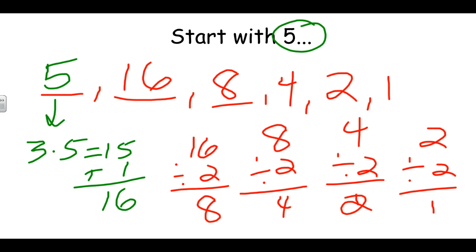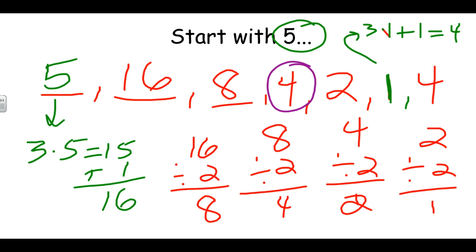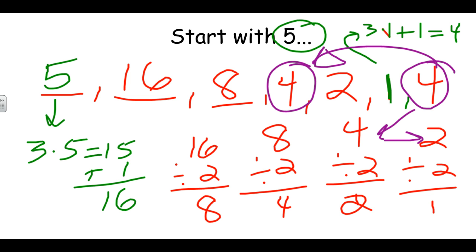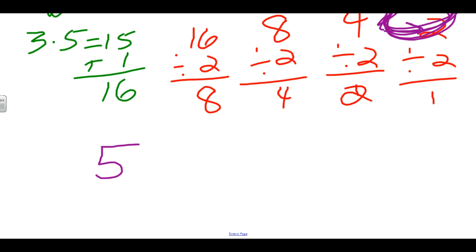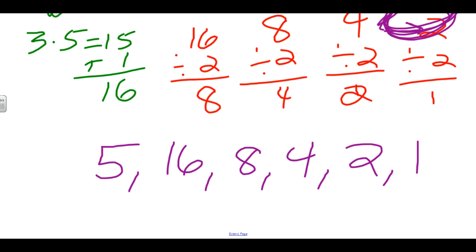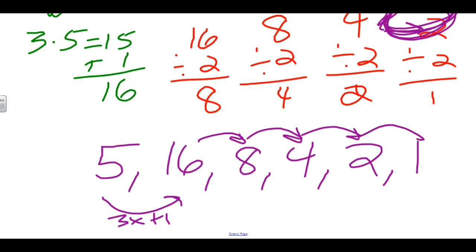Now one is odd, so we take one, multiply by three and add one, and get four. Four is even again, and we're back to the same number in the sequence we had before. This is where our sequence stops, because if we keep going: four divided by two is two, two divided by two is one, one times three plus one is four — it just repeats. So the Hailstone Sequence for five is: 5, 16, 8, 4, 2, 1. Once we make it back to a number we've already seen in the cycle, we stop.